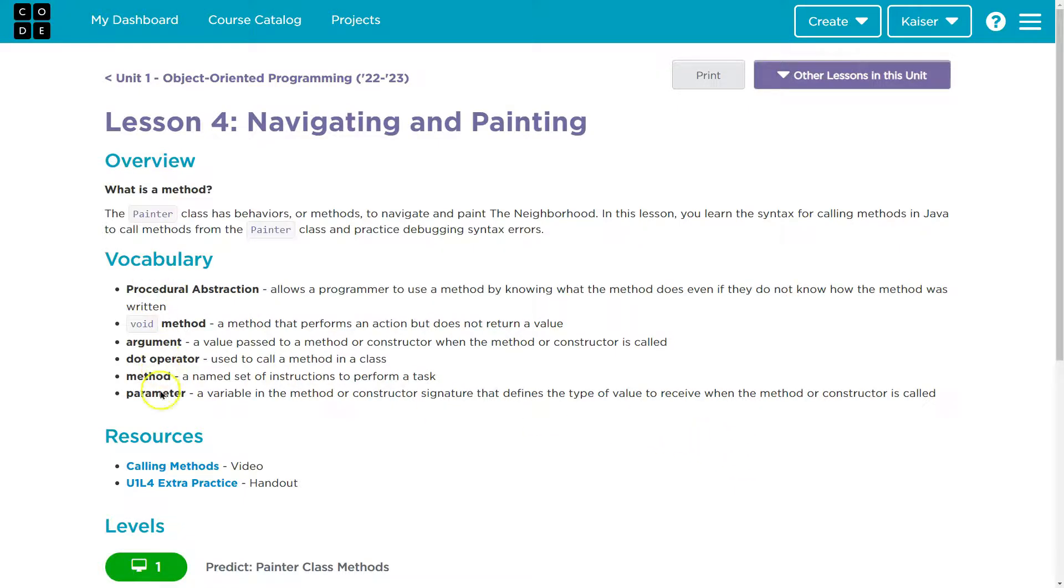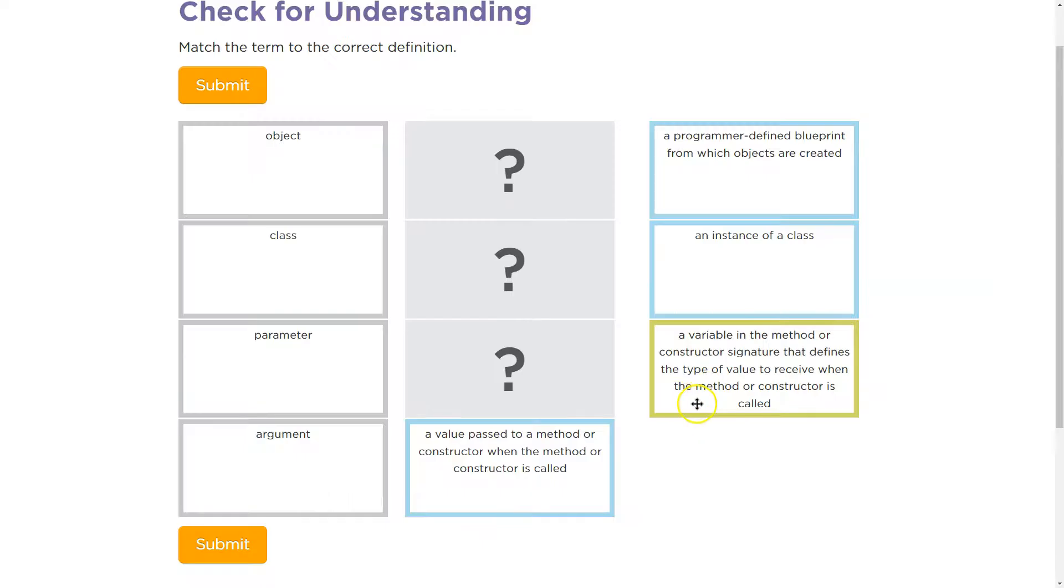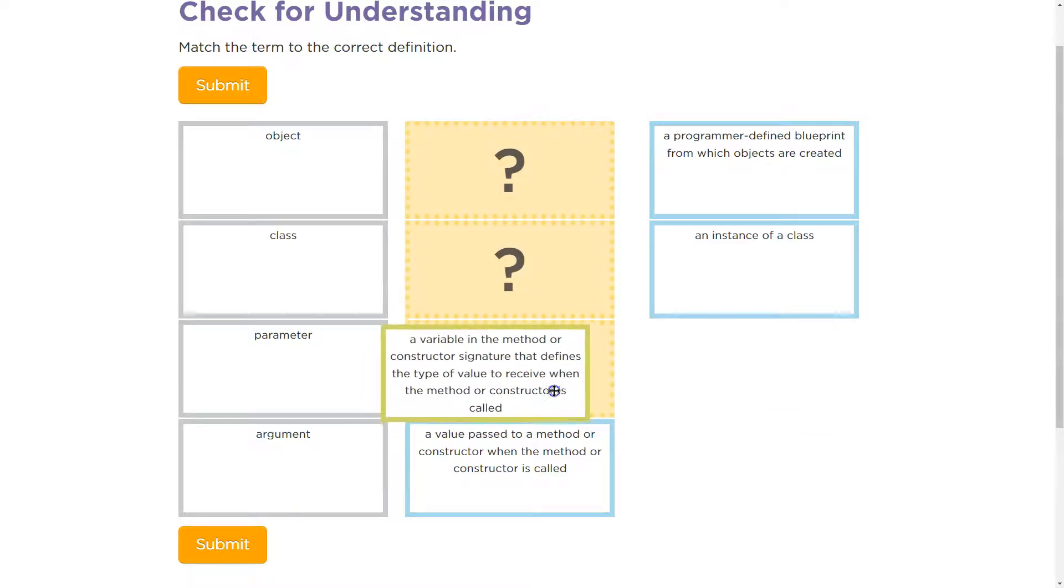Let's see if they had any others in this one. They, oh, parameter. A variable in a method or constructor signature that defines the type of value to receive when the method constructor is called.